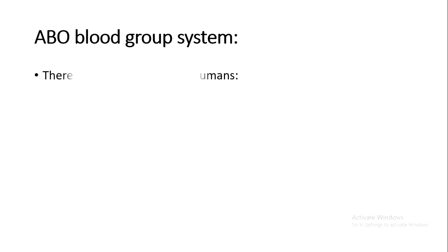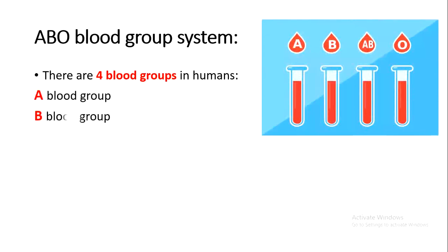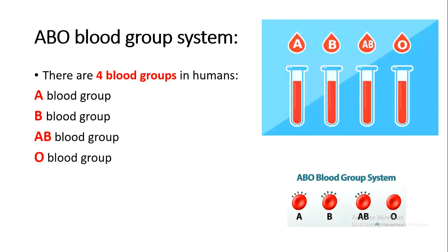Let's move to our topic, which is the ABO Blood Group System. The ABO Blood Group System is a system that determines if a person's blood is type A, B, AB, or O. There are 4 blood groups in humans: blood group A, blood group B, blood group AB, and blood group O.